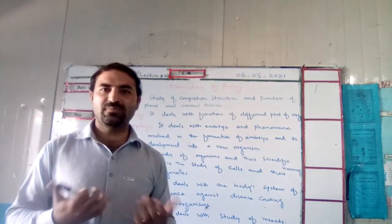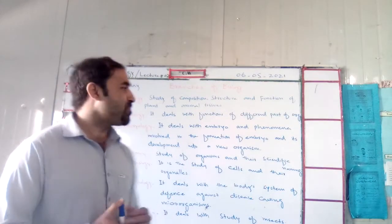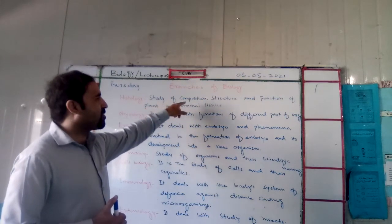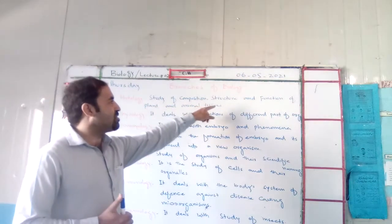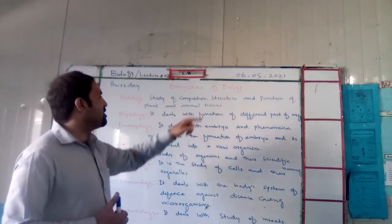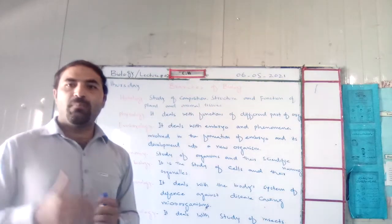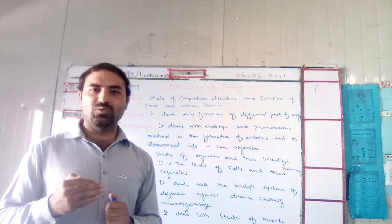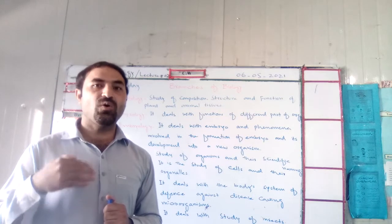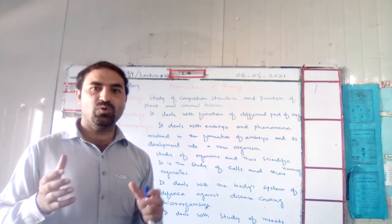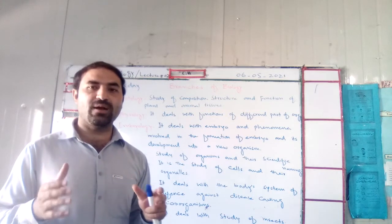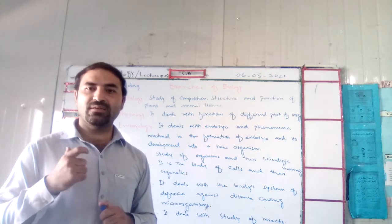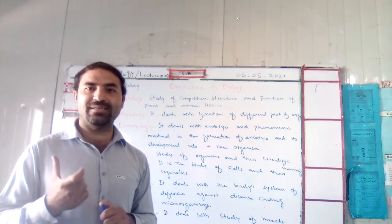So what is basically histology? Histology is the branch of biology which deals with the study of composition, structure, and function of plants and animal tissues. For example, here we have plant vascular tissues, xylem and phloem.